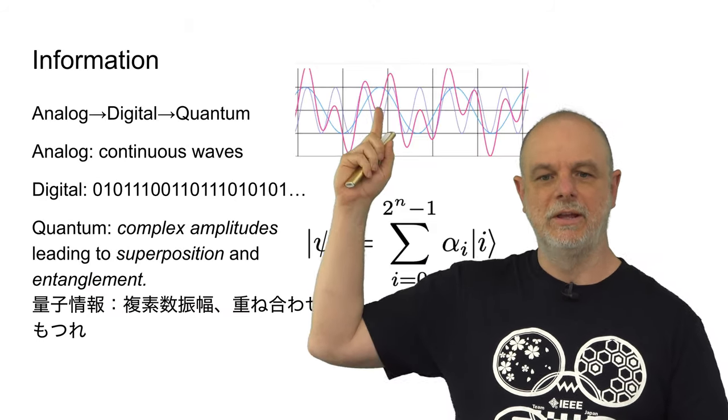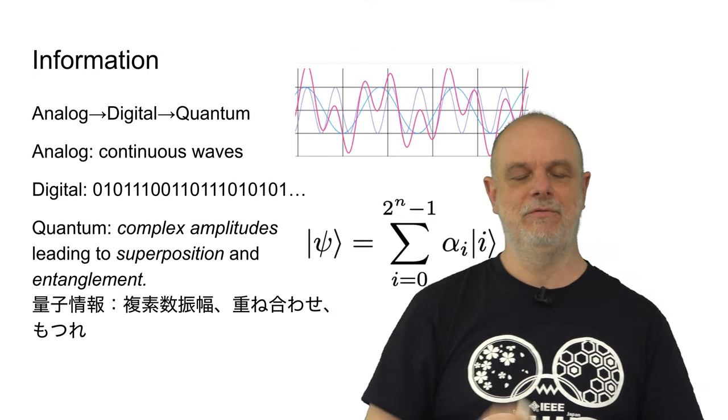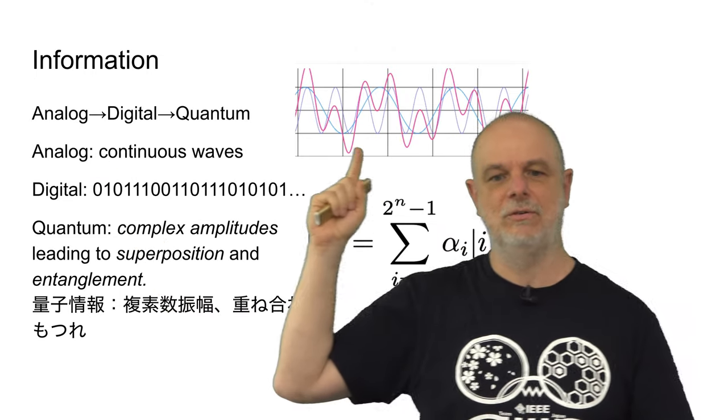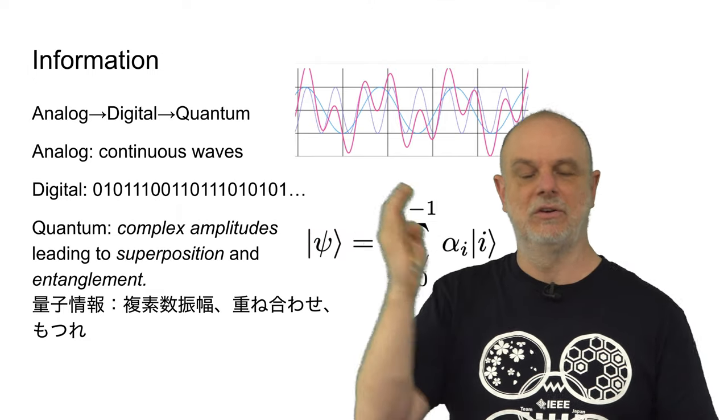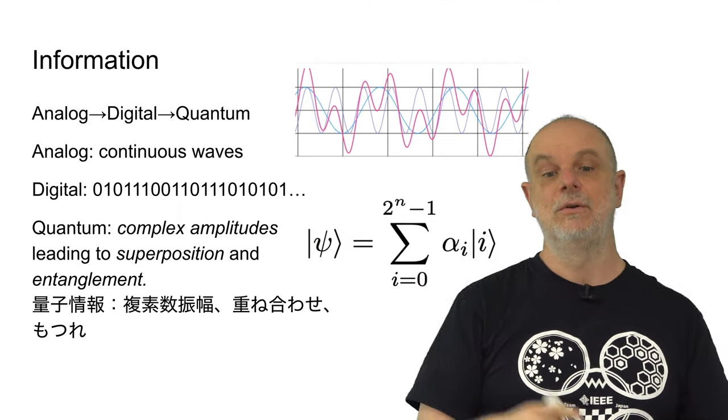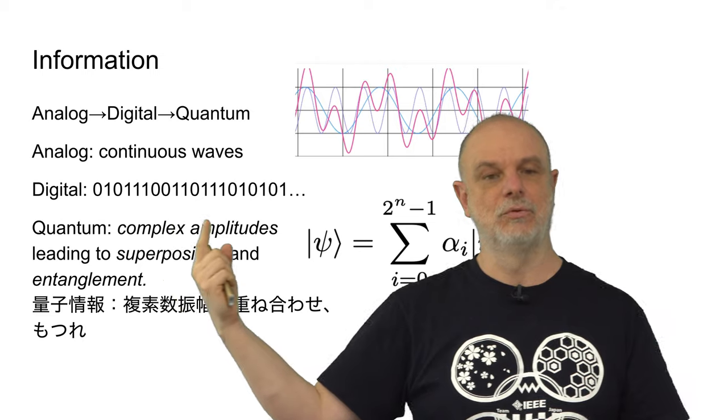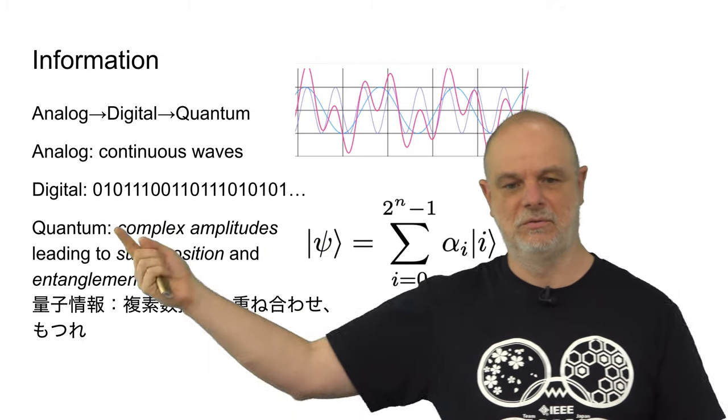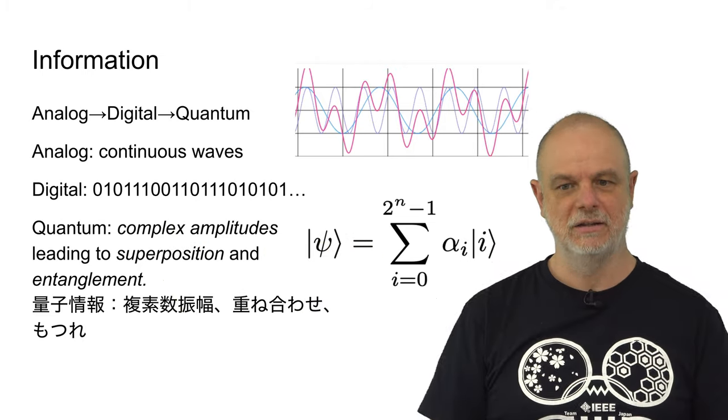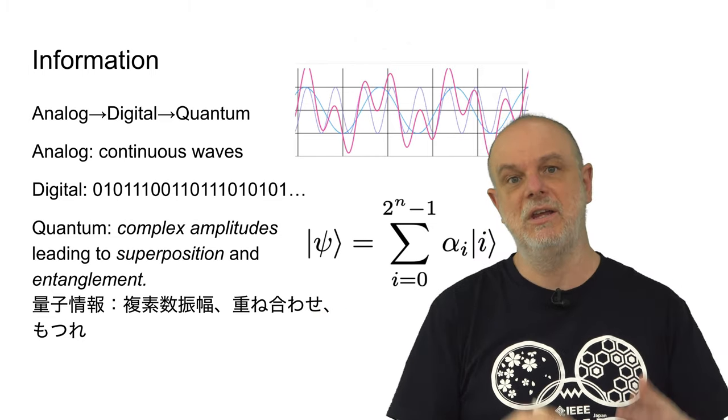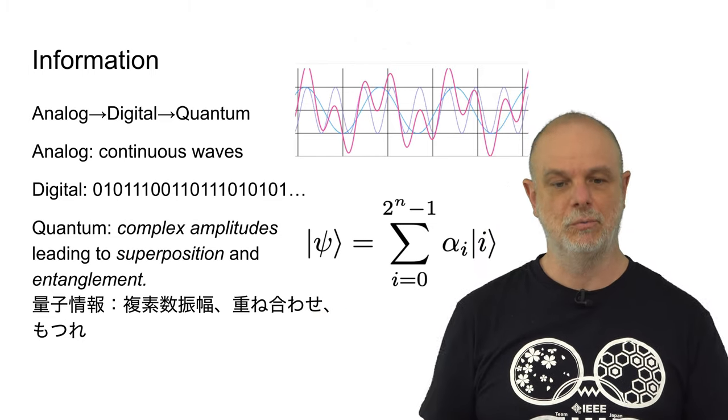So, ultimately, there are three types of information. There is analog information, which is waves like this, and they're continuous. There is digital information, which is zeros and ones, just however you want to structure the data. Those are the kinds of computers that you're probably thinking of when we think of the computers we use.